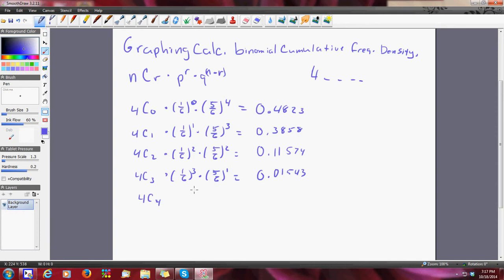And four choose four, believe it or not, is ridiculously small, that should be four times five to six is zero, and it ends up being 0.0007716.